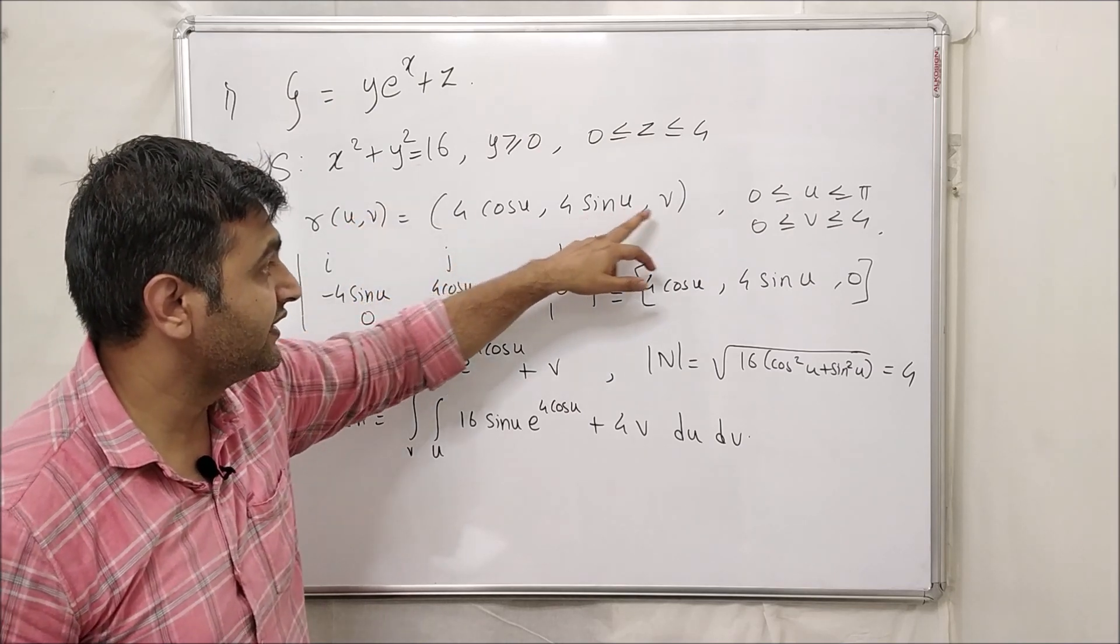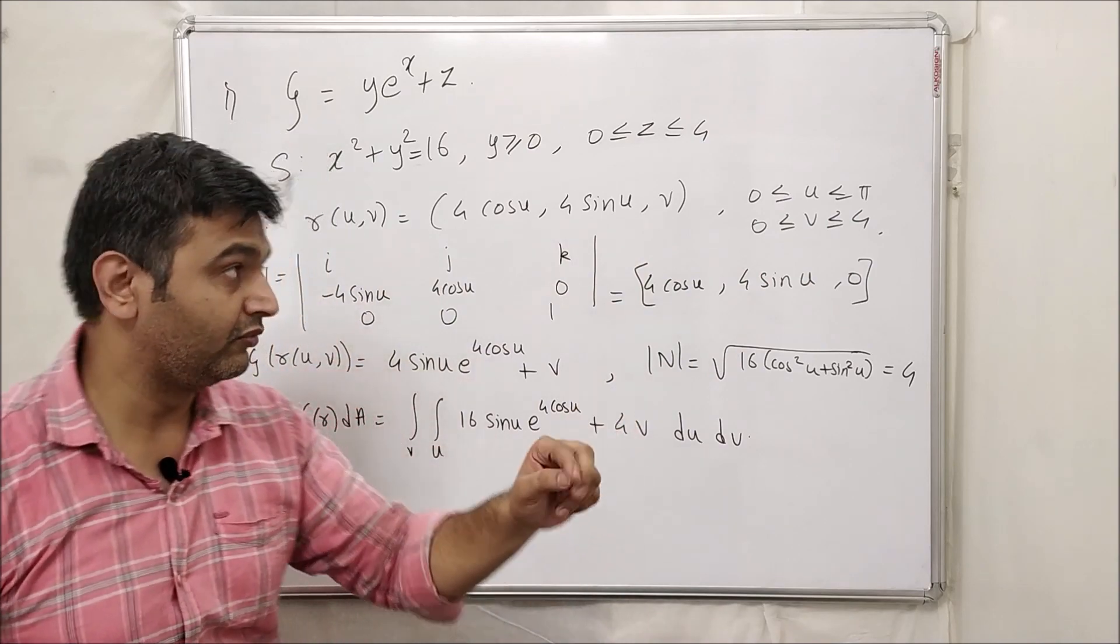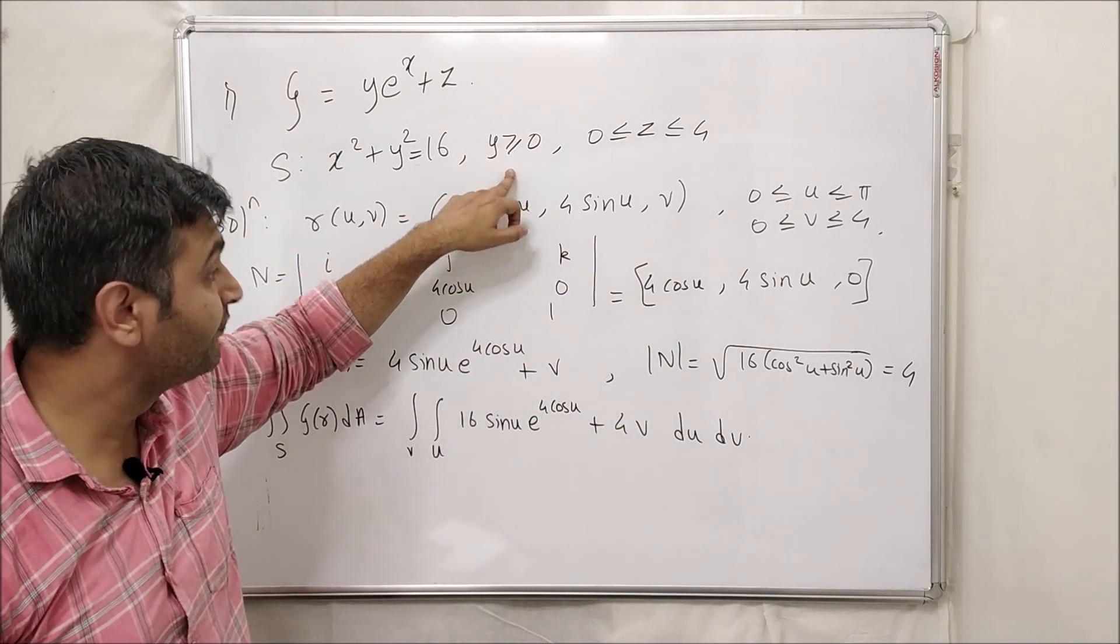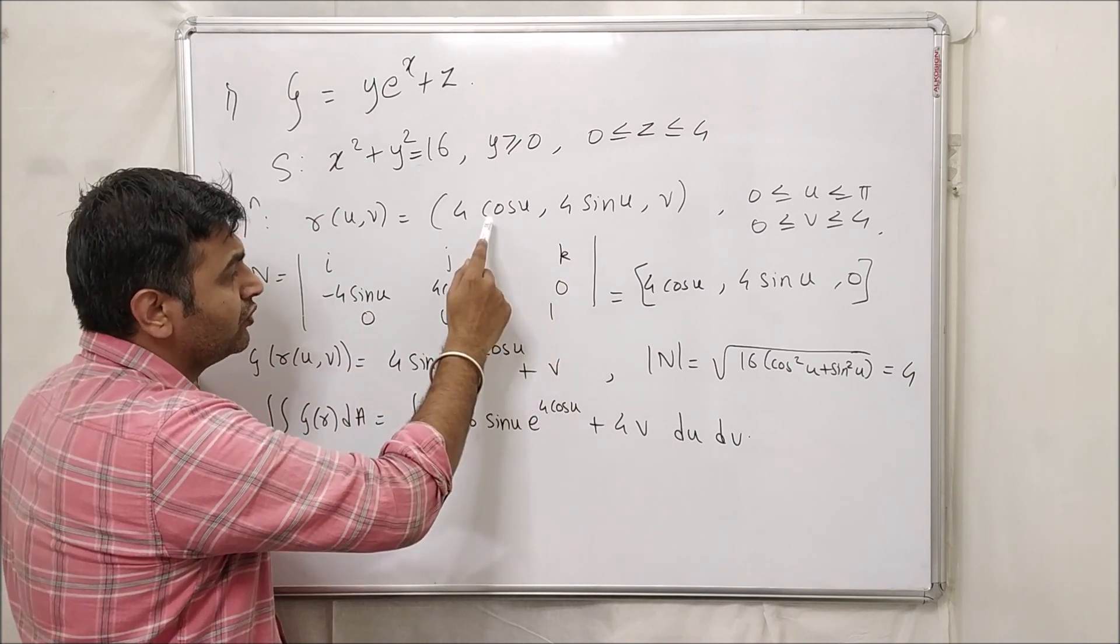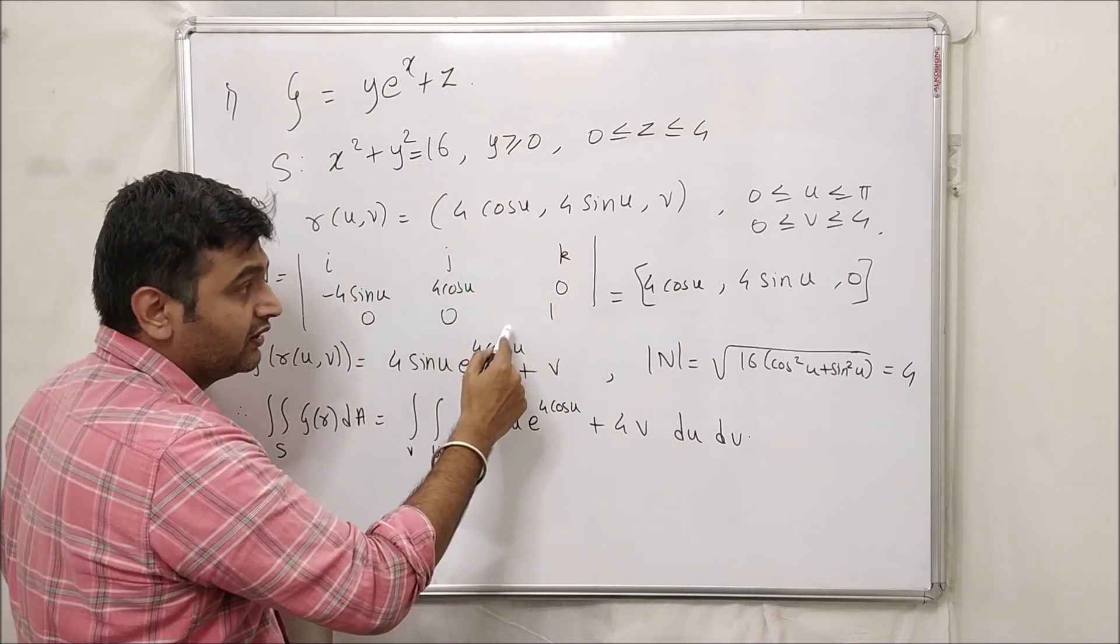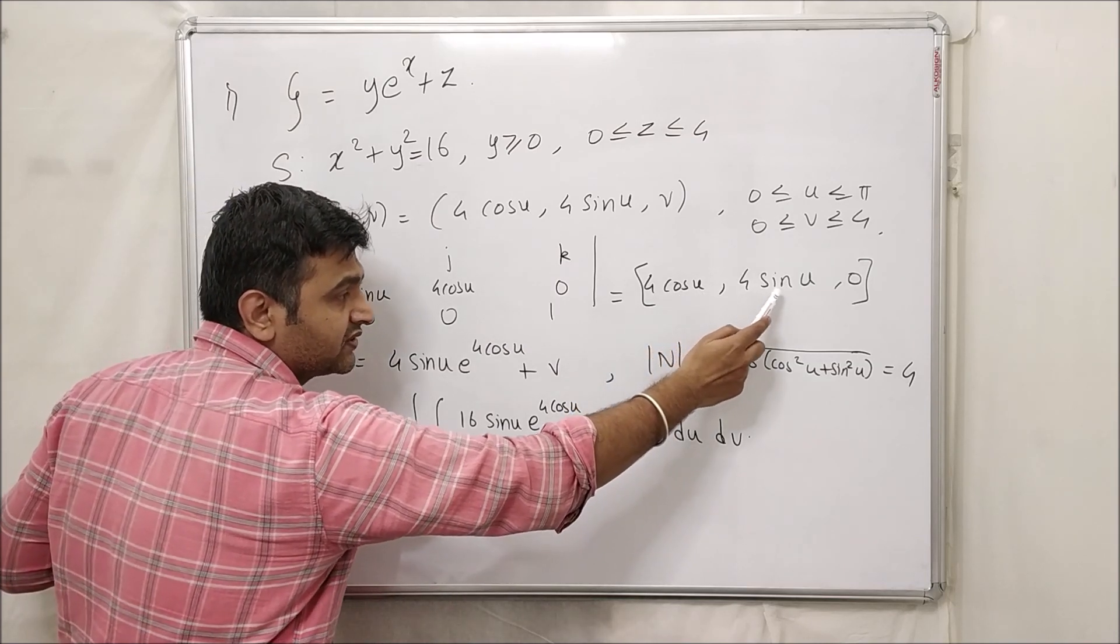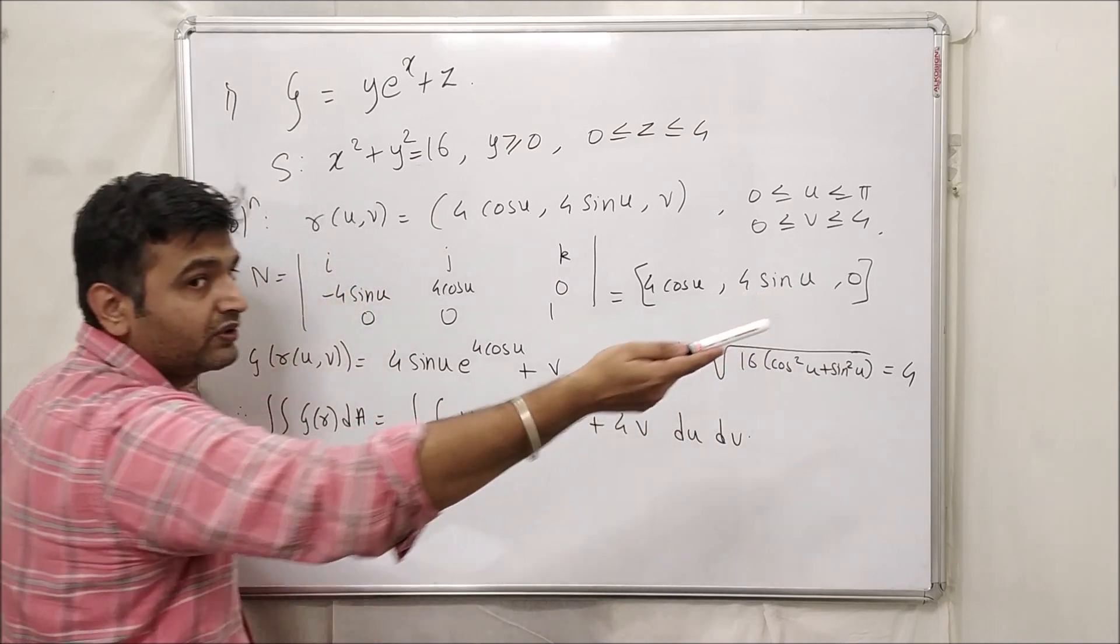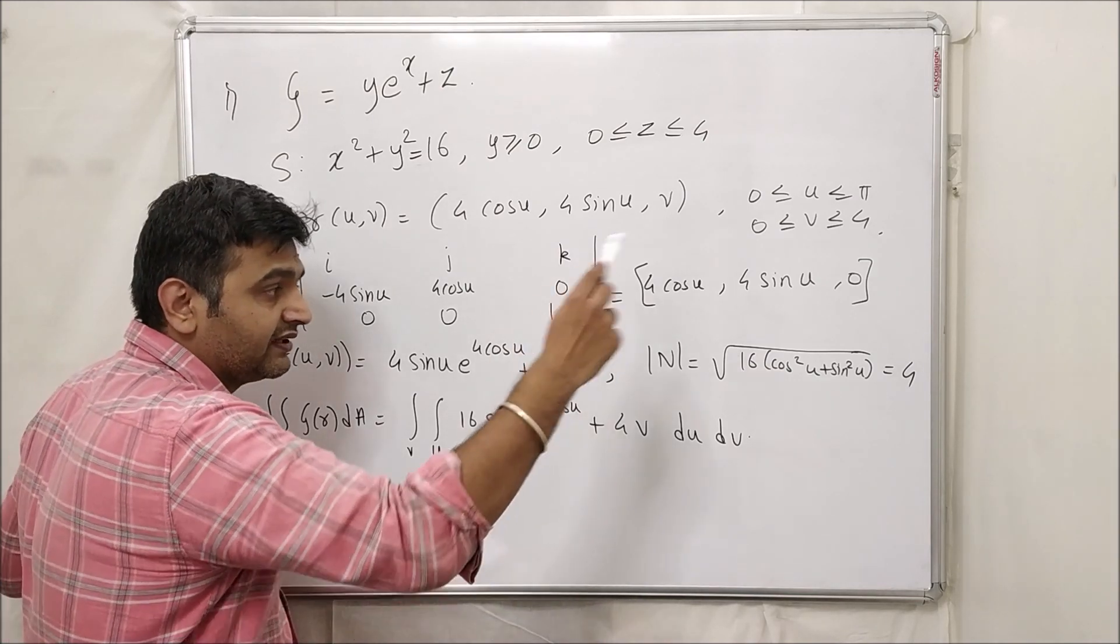So u will go from 0 to pi, not 0 to 2 pi because our y is greater equal 0. Now the same thing, you find the normal vector r with respect to u and then r with respect to v. Then you find the normal vector 4 cos u into i cap plus 4 sin u into j cap plus 0 into k cap. If you don't want to write i cap j cap k cap you write in the square bracket.